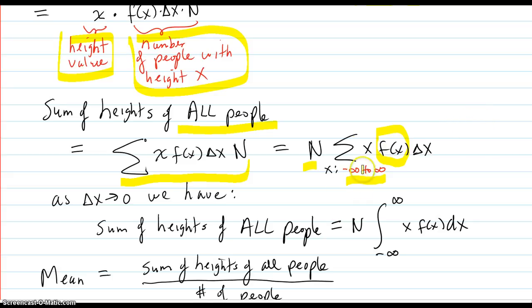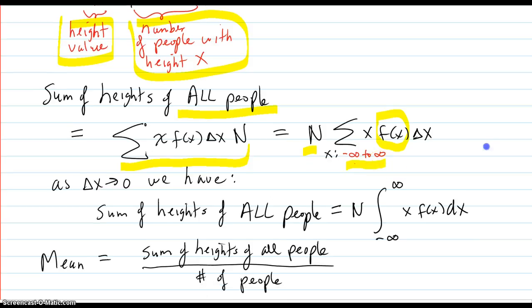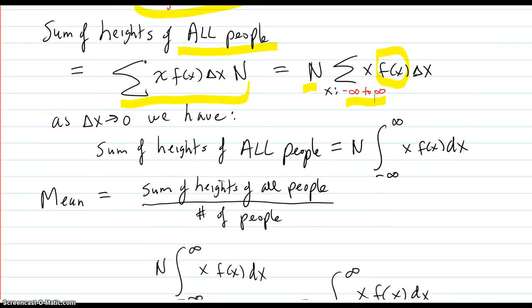So we could still integrate it and add it up from negative infinity to infinity. It's just that a lot of those would be zeros. So as delta x goes to zero,